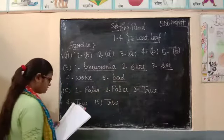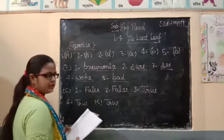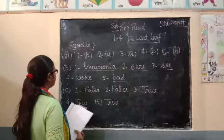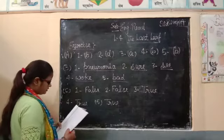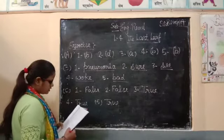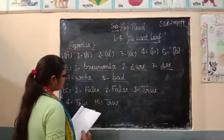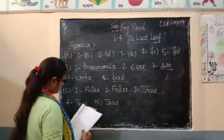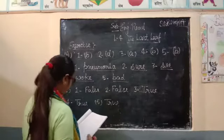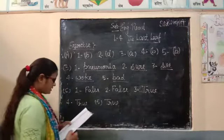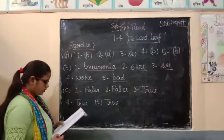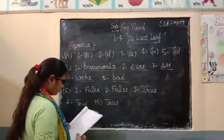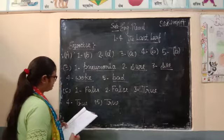Fourth — 'John C was waking up to see the last leaf when seen' — answer: woke up. Fifth — 'John C realized it was a foolish thing to die' — answer: fall back. Hugh painted the leaf to make her friend feel better.